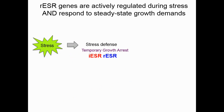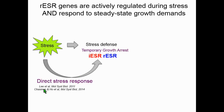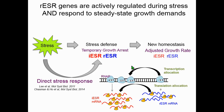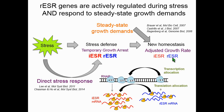In summary, our model proposes that upon stress there is a temporal growth arrest and ESR is highly activated, which we propose is a direct stress response. The reduction of rESR genes contributes to the reallocation of cellular resources at both the transcriptional and translational levels — the transcriptional model was already published in 2014. When cells recover from stress, they reach a new homeostasis with an adjusted growth rate, mild ESR activation, and the level of ESR is set by the growth demand under steady state.